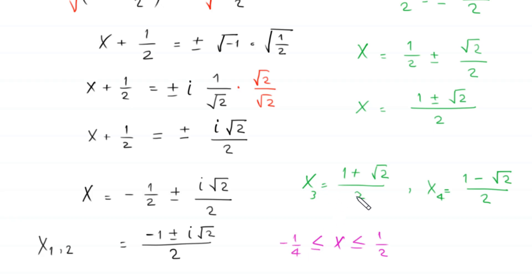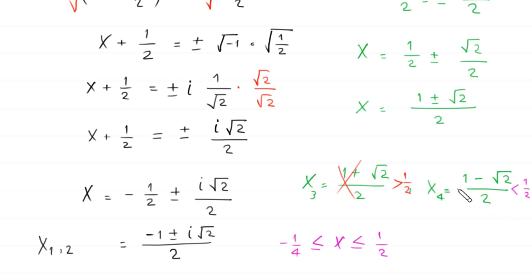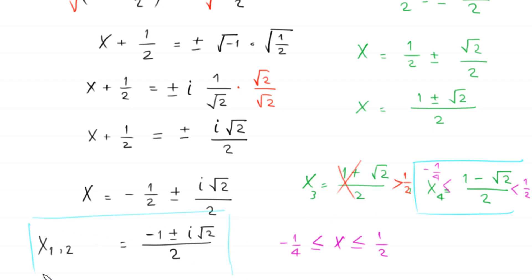The third value x₃ = (1 + √2)/2 is greater than 1/2, so it is rejected as it falls outside the domain. The fourth value x₄ = (1 − √2)/2 is approximately negative 0.207, which is greater than negative 1/4, so it is a valid real solution. The two complex solutions are also valid. Thank you.